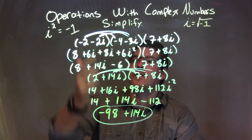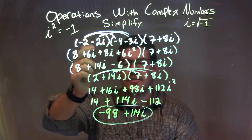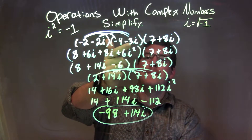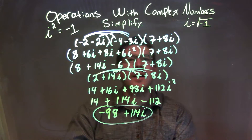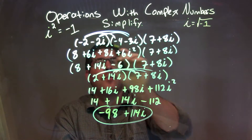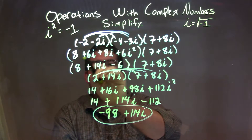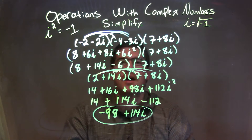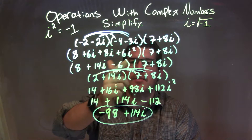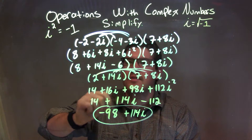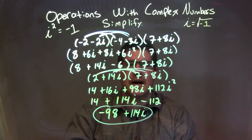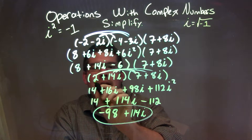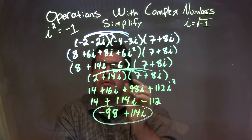So let's recap. We were given negative 2 minus 2i times negative 4 minus 3i times 7 plus 8i. I multiplied the first two out and got 8 plus 6i plus 8i plus 6i squared. i squared became negative 1, so negative 1 times 6 is negative 6, and 6i plus 8i is 14i.